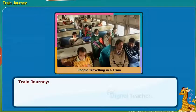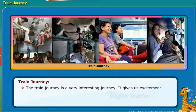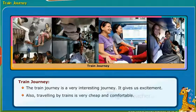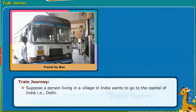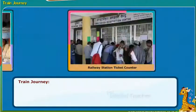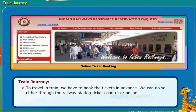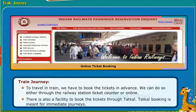Now let us know about train journey in detail. Trains help people to travel to distant places. A railway station is a place where trains start and stop. Train journey is a very interesting and exciting journey, and traveling by train is very cheap and comfortable. For example, a person living in a village in India who wants to go to Delhi, the capital of India, has to first travel from his village to a city and then board a train to Delhi. To travel by train, we have to book tickets in advance — either through the railway station ticket counter or online. There is also a facility to book tickets through Tatkal, which is meant for immediate journeys. The government provides concession in ticket fare to senior citizens and physically handicapped persons.